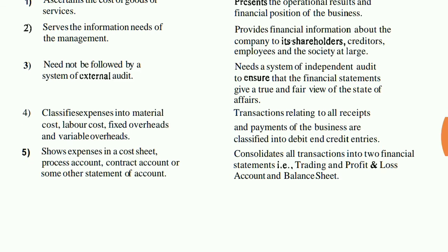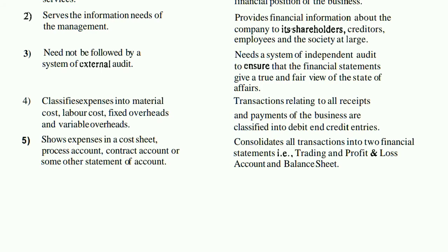The fourth point: cost accounting classifies expenses into material cost, labor cost, fixed overhead, and variable overhead. But in financial accounting, things are slightly different — transactions related to all receipts and payments of the business are classified into debit and credit entries. In financial accounting, whatever accounts we have, we classify them using the golden rules — real, nominal, and personal accounts.